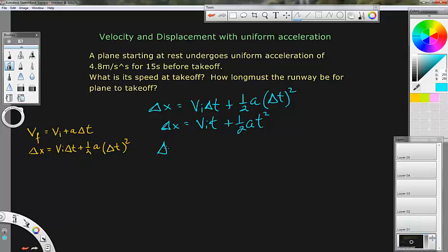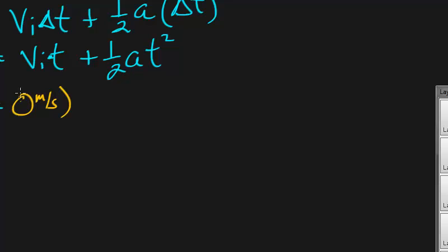So we're going to solve for delta x, that's our goal unit here. And the vi, what's the initial velocity of this? 0, 0 meters per second, times 15 seconds, which you can see is going to cancel there.